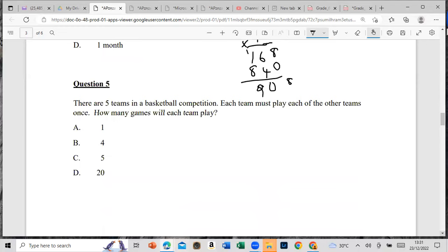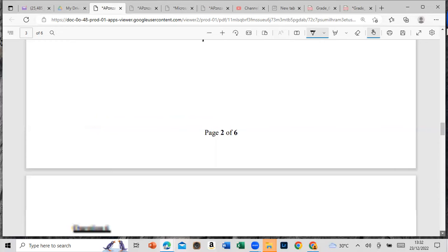Question 5. There are five teams in a basketball competition. Each team must play each other teams once. How many games will each team play? We have Team A. Team A is going to play B, C, D, and E. Let's focus on A alone. So A plays B, A plays C, A plays D, and A plays E. So that will be four times.